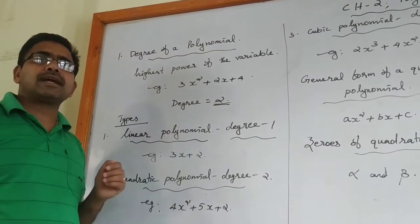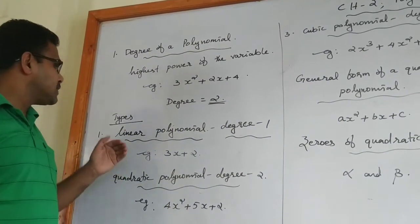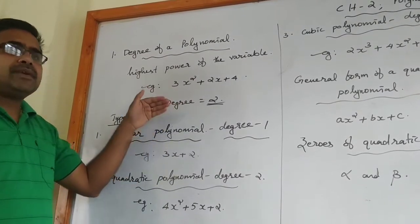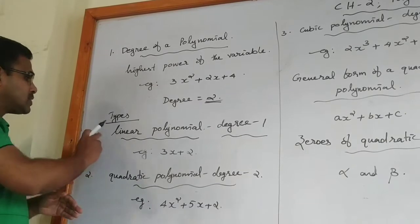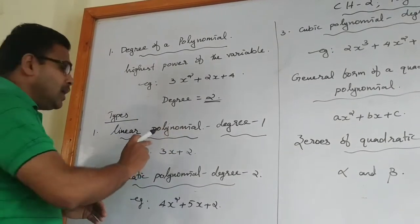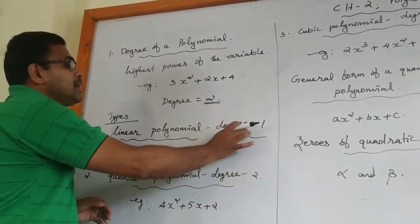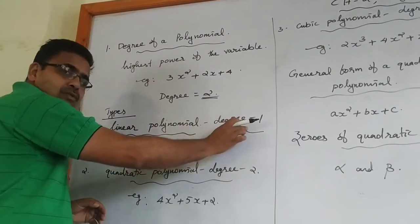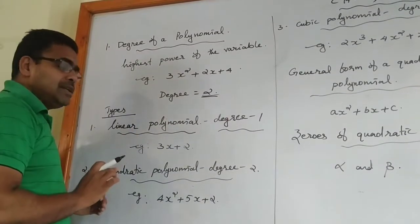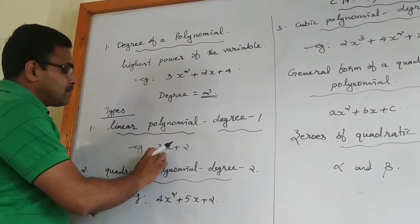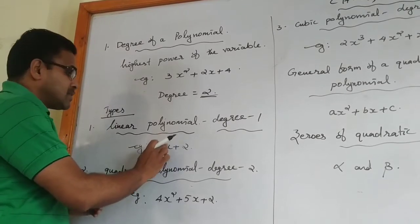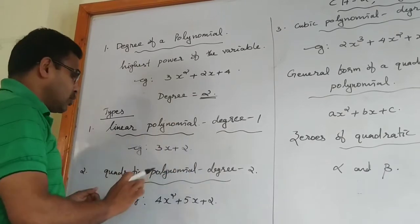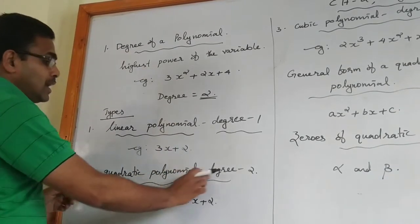This we already studied in class 9. Now, according to the degree of the polynomial, we are dividing the polynomial into different types. First one is linear polynomial. What is meant by a linear polynomial? The degree of the polynomial is 1. We are calling it as a linear polynomial. For example, 3x + 2. Here the power of the variable is 1, that is why this is an example of a linear polynomial.